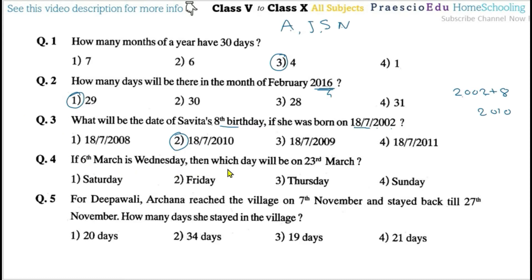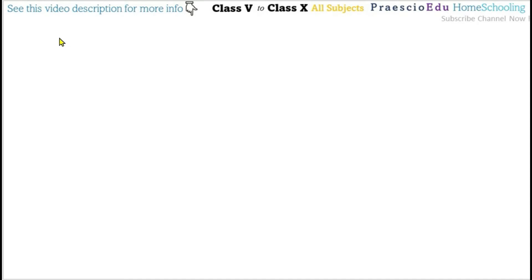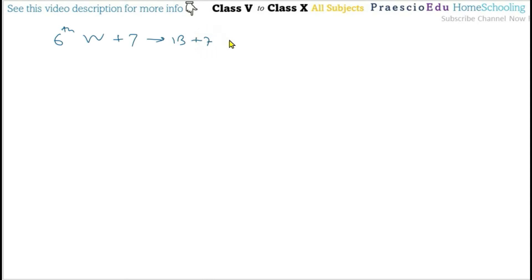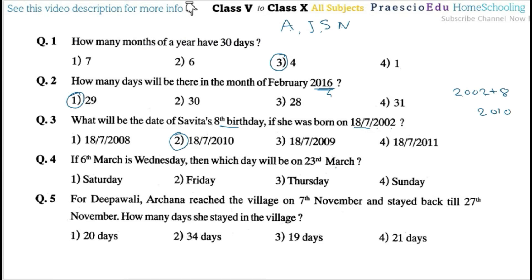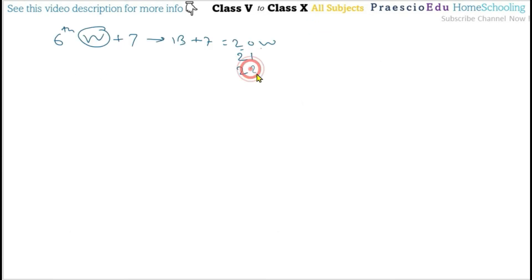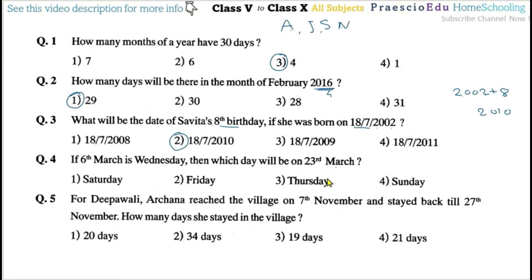Question number four: If 6th March is a Venus day (Wednesday), which day will 23rd March be? Adding 7 to 6th gives 13th on Venus day, then 20th on Venus day. From 20th: 21st is Thursday, 22nd is Friday, 23rd is Saturday. So option number one is correct.